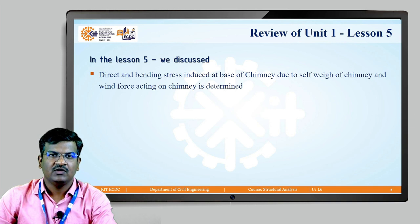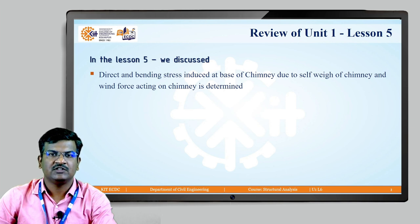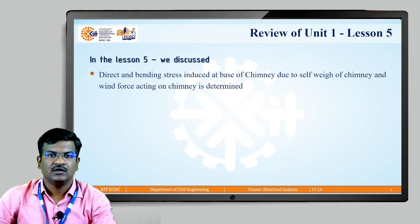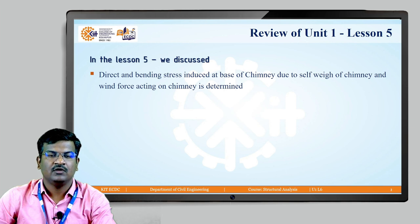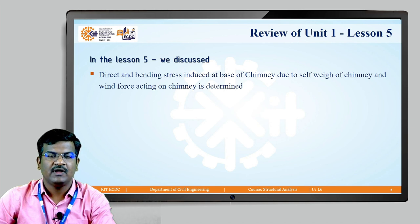Before that, let us recall what we discussed in Lesson Number Five. In Lesson Five, we discussed about the chimney — how to find out the direct and bending stress induced at the base of the chimney due to the self-weight and the horizontal wind pressure acting on it. There are two types: circular chimney, and rectangular or square cross-section chimney. According to the lever arm, the total horizontal force and bending moment are calculated, and we find maximum and minimum resultant stress at the base.